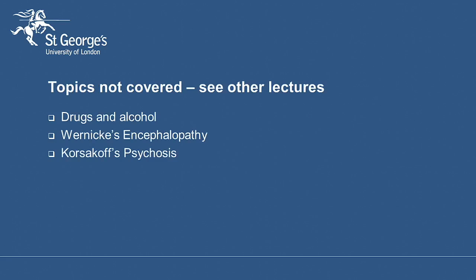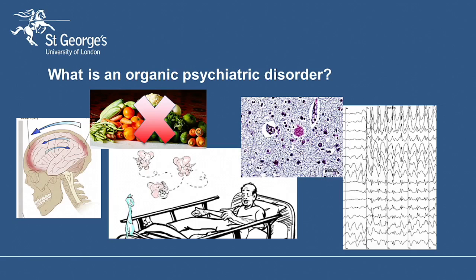So let's first consider what is an organic psychiatric disorder. We're using the word organic in a particular way — we're comparing it to functional psychiatric disorders such as schizophrenia, depression, anxiety and obsessive compulsive disorder. We're not talking about the freshness of your fruits and vegetables here. We're talking about psychiatric disorders with a physical mechanism behind them — conditions such as head injury, delirium, dementia and epilepsy.